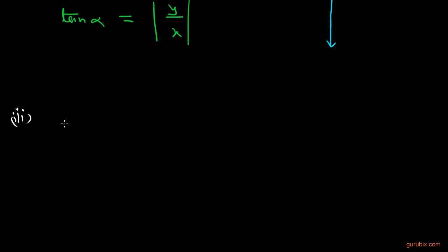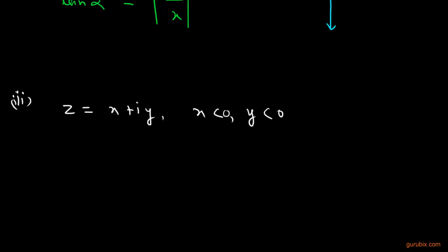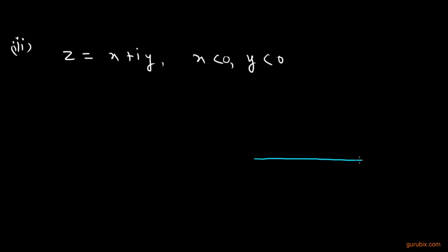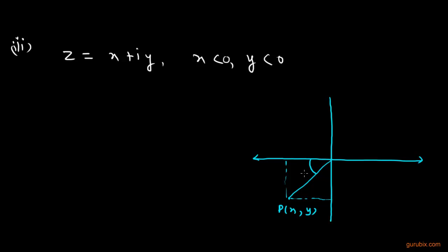Now let us move to the third part. Suppose we are given a complex number z = x + iy, where x is negative and y is also negative — both real and imaginary parts are negative. In the Argand plane, we denote it by point P with coordinates (x, y). If this angle is alpha, then the argument θ is equal to −(π + α), i.e., minus pi minus alpha.